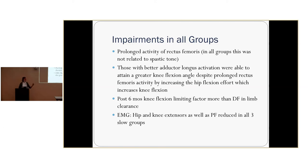Knee flexion is the limiting factor more than dorsiflexion in limb clearance. When you see a patient catching their toes, there's a tendency to think they need an AFO, but a lot of times it's because their knees or hips aren't flexing — their ankle might actually be at neutral dorsiflexion. Adding an AFO won't necessarily help limb clearance if the impairment isn't at the ankle. The EMG recordings for the three slower groups — moderate, flexed, and extended — showed that hip and knee extensors as well as plantar flexors were significantly reduced. Those are the muscle groups to prioritize for strengthening.